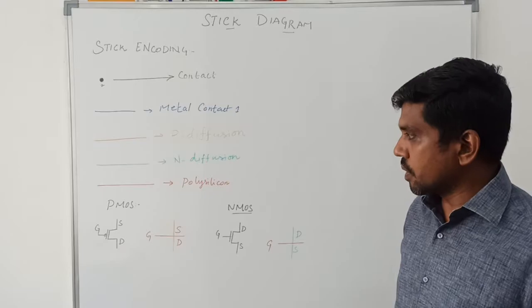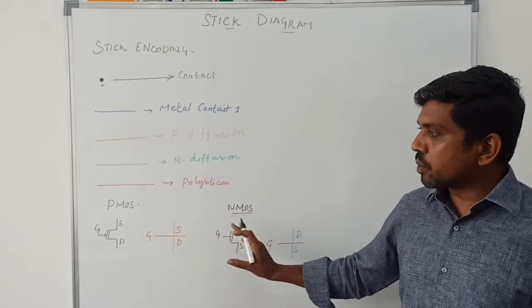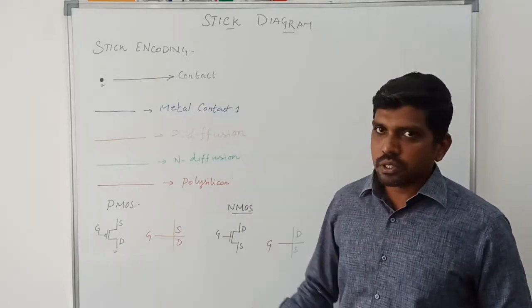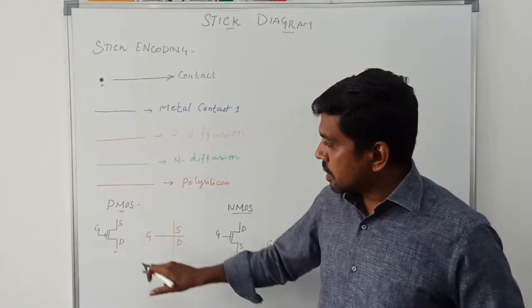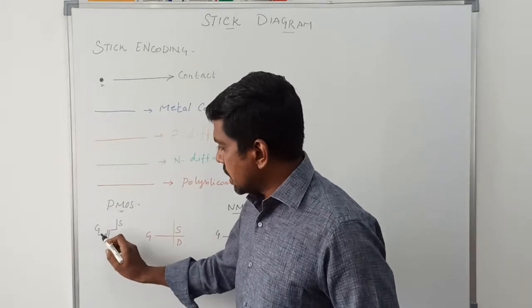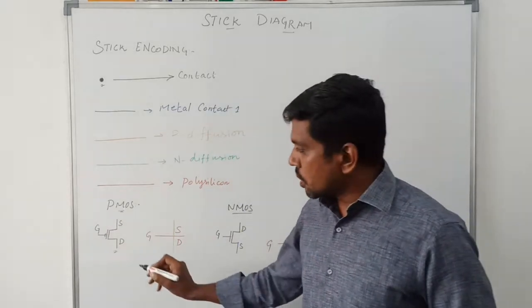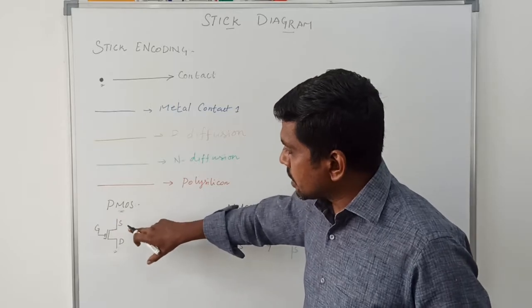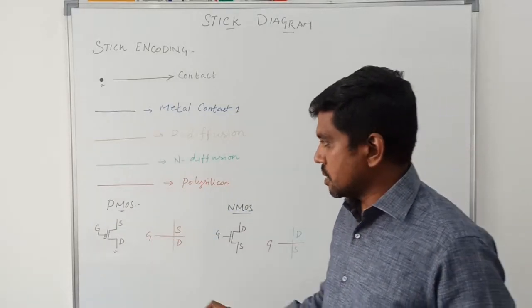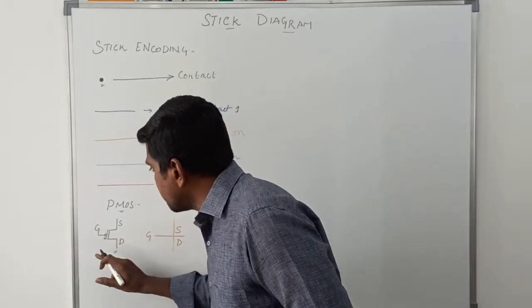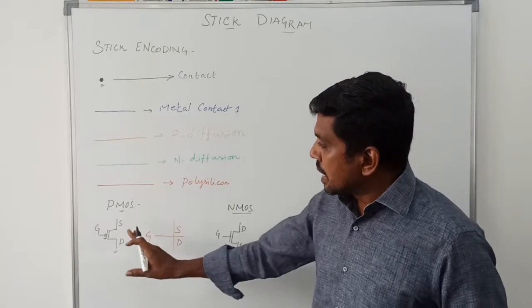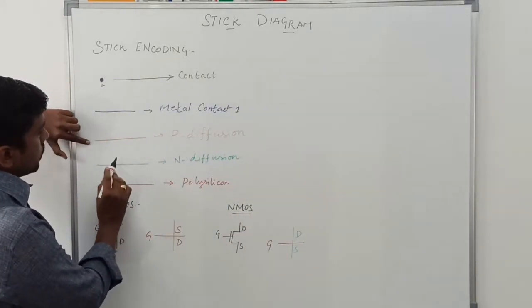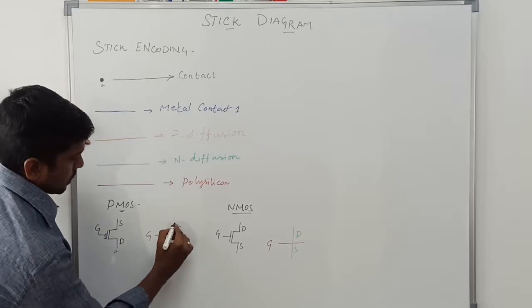Next is the PMOS and NMOS encoding process. This diagram represents the static CMOS design — it is the symbol of a PMOS transistor, consisting of three terminals: gate, source, and drain. The gate uses a bubble to indicate whether the transistor is acting as a PMOS transistor. Here we use one bubble, so it is a PMOS transistor.